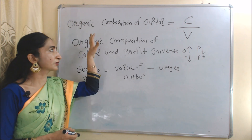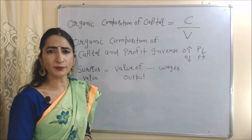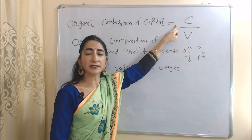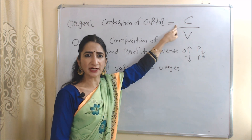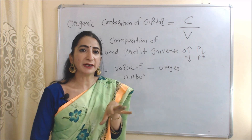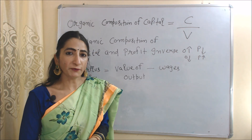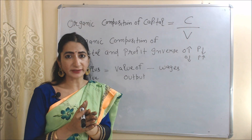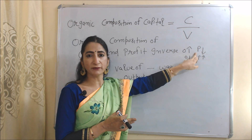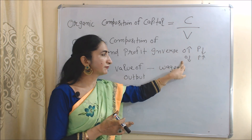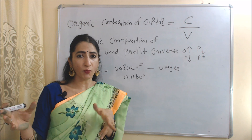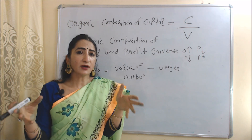The next concept, which is very important for profit, is called the organic composition of capital. Organic composition of capital equals c over v, where c is constant capital (material, machinery, etc.) and v is variable capital (labor). Profit depends on the organic composition of capital, and they have an inverse relation: if organic composition of capital increases, profit will fall; if it falls, profit will increase.